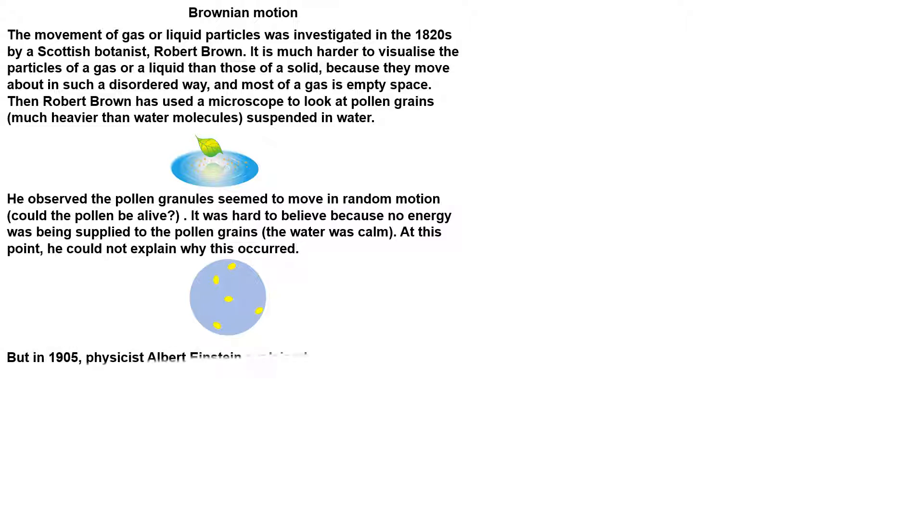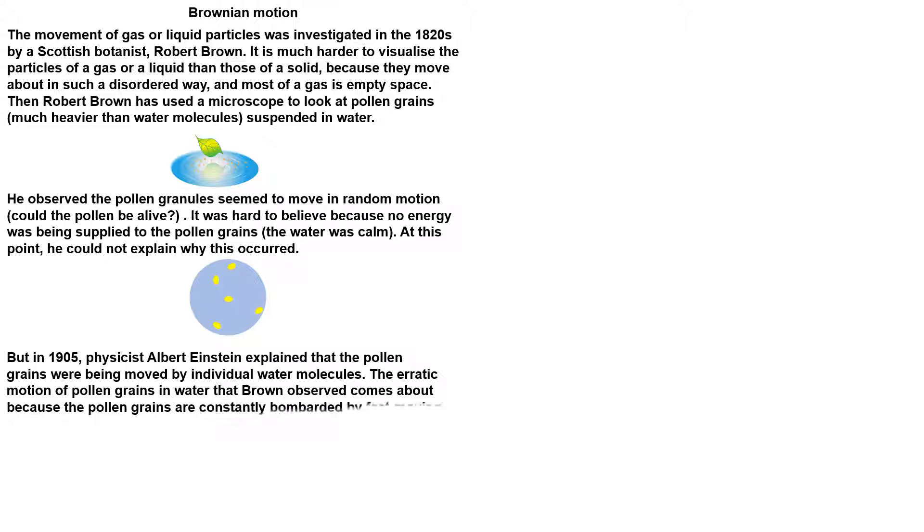But in 1905, the physicist Albert Einstein explained that the pollen grains were being moved by individual water molecules. The erratic motion of pollen grains in water that Brown observed comes about because the pollen grains are constantly bombarded by fast-moving water molecules.